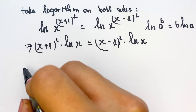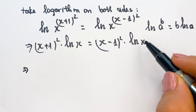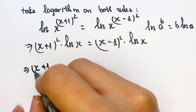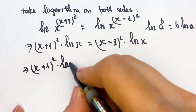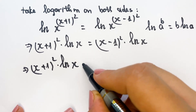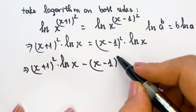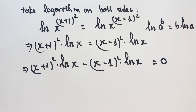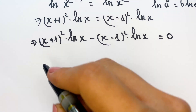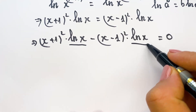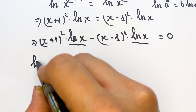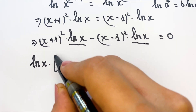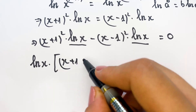For the next step, you need to move the factor on the right hand side to the left hand side. So we can write: (x+1)² times logarithm of x minus (x-1)² times logarithm of x equals zero. We can take out the common factor: logarithm of x times [(x+1)² minus (x-1)²] equals zero.